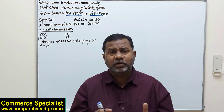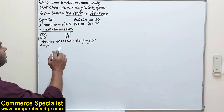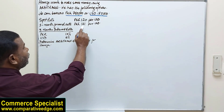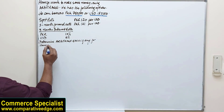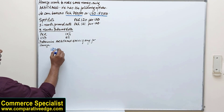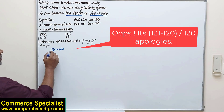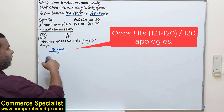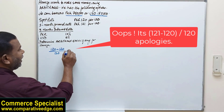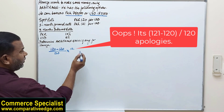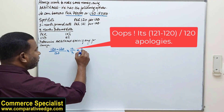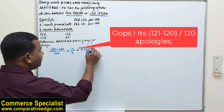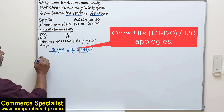The first thing you need to check is whether the 3-month forward rate is more than the spot rate. Yes — the 3-month forward rate is 121 and the spot rate is 120, so it is more. Now let's calculate the percentage increase: (121 − 120) / 120, then multiply by 12 and divide by 3 to annualize it. That gives us 3.33%.